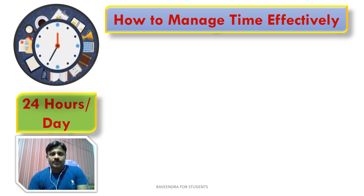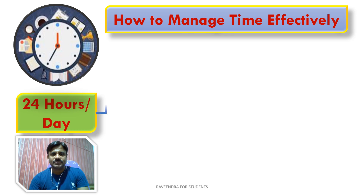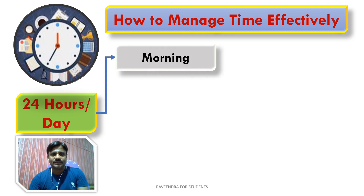If we take the time per day, it is 24 hours — it is fixed. We cannot change it, not at all possible. Then for our convenience, we are dividing this 24 hours into 4 slots, as you know very well.